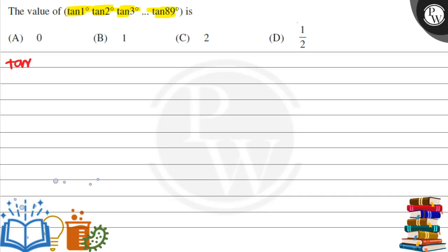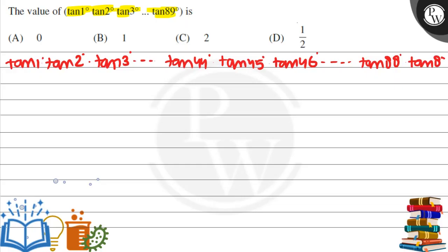Now if we can see, tan 1 degree into tan 2 degree, this is tan 1 degree into tan 3 degree and so on up to tan 43 degree, then tan 44 degree in the middle, except tan 45 degree, tan 46 degree up to tan 88 degree, tan 89 degree.